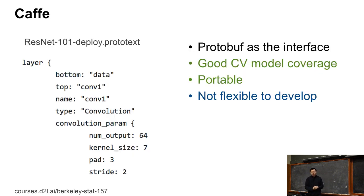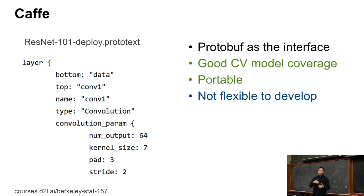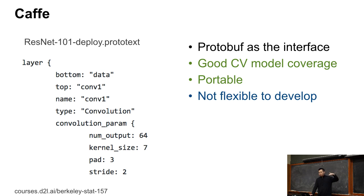The first one is Caffe. Caffe is made from Berkeley. It's the most popular deep learning framework for computer vision about four years ago. The programming interface is that you give it a protobuf — you write text and describe the layer. For example, this is part of the ResNet-101 network definition. We have layers, we have the bottom layer, the top layer, the type, and also parameters.